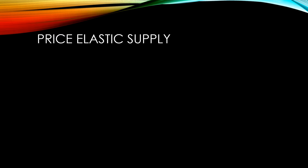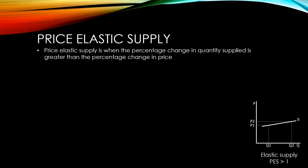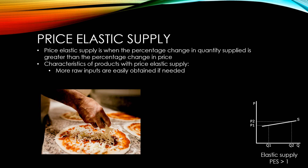Elastic supply is when the percentage change in quantity supplied is greater than the percentage change in price. Products need certain characteristics to have elastic supply. This might include the fact that more raw inputs for your production process can be easily obtained if needed. For example, a pizza firm that knows there's going to be a busy weekend can easily acquire more ingredients to make more pizzas.